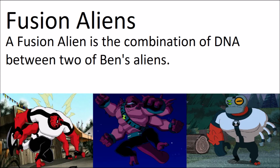The first fusion he turns into is Fourmungousaur, a fusion between Fourarms and Humungousaur. And then most recently they brought that gimmick back again in the Ben 10 reboot, where Ben's Omnitrix was glitching up in one episode, and the first time he used it he turned into Grey Arms — a combination of Grey Matter and Fourarms. Man, these episodes really like Fourarms.